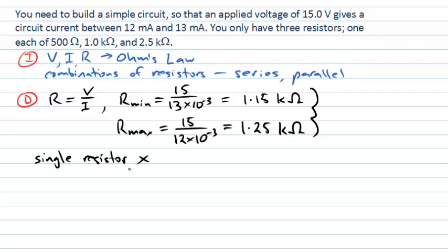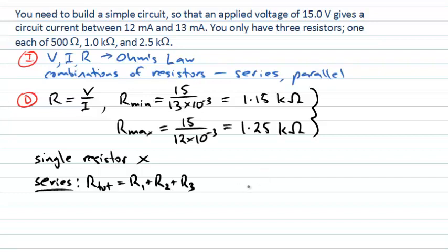We could try putting resistors in series. The total resistance of a series combination is simply the sum of the individual resistances. We don't want anything bigger than 1.25 kΩ, so we probably don't want the 2.5 kΩ at all. That leaves the 1 kΩ and the 0.5 kΩ, but adding those gives 1.5 kΩ — too large. All series combinations give us something too large.